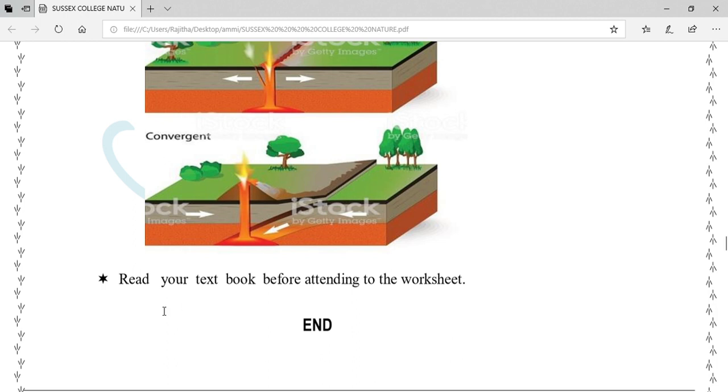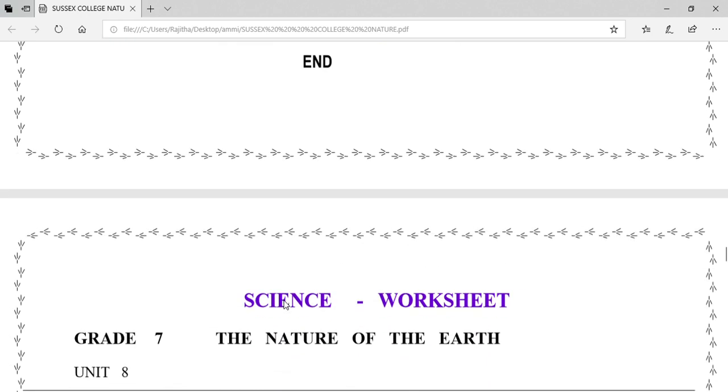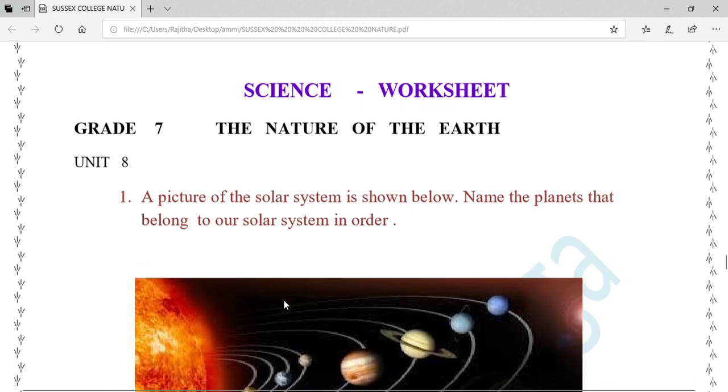Then you have to read your text before attending to the worksheet. That is the end of the lesson. Then the worksheet: The nature of the earth, grade 7, unit.